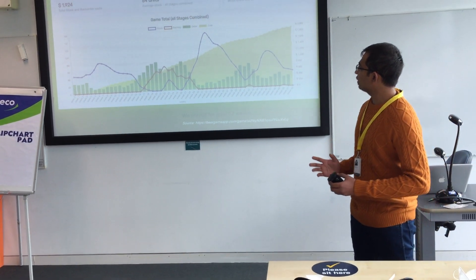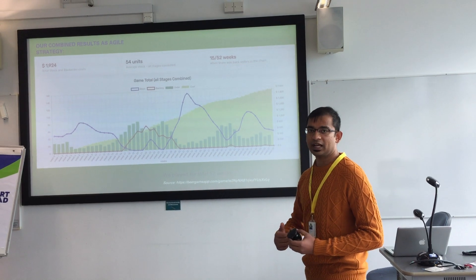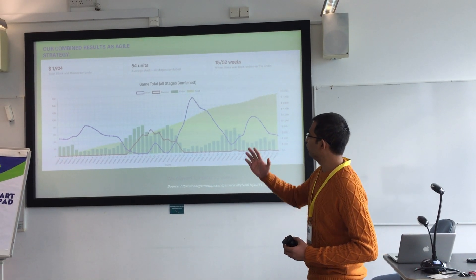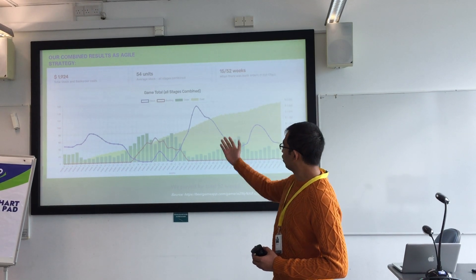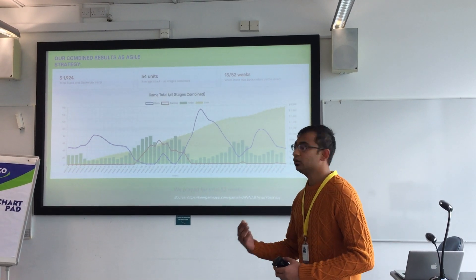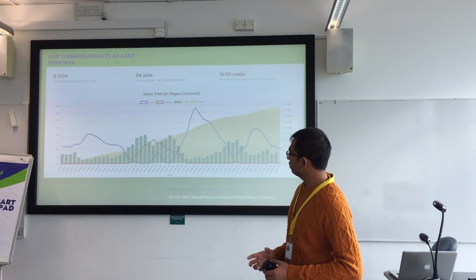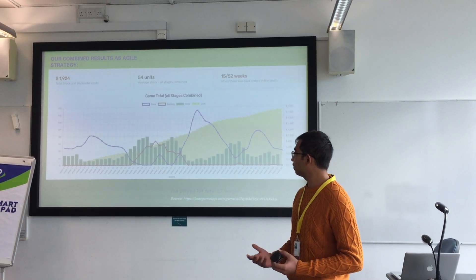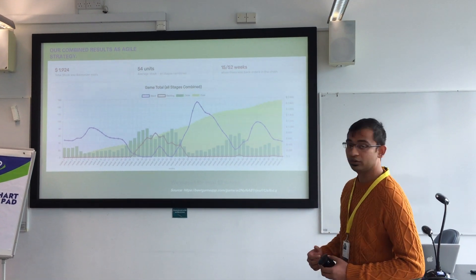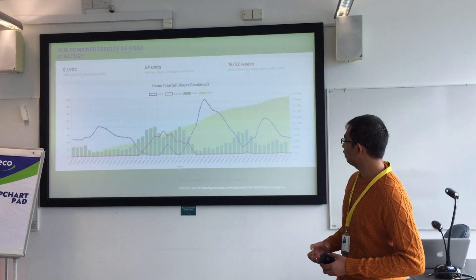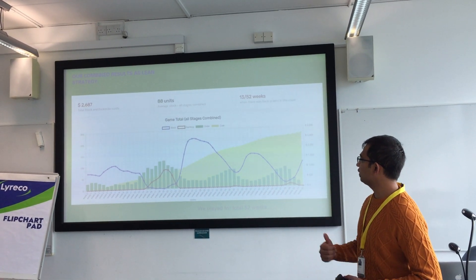This is our combined result. We used a good strategy and achieved some good results comparing to the lean strategy. Here we got $90-$24 as total stock cost including back order cost, and 54 units. This is our combined result.